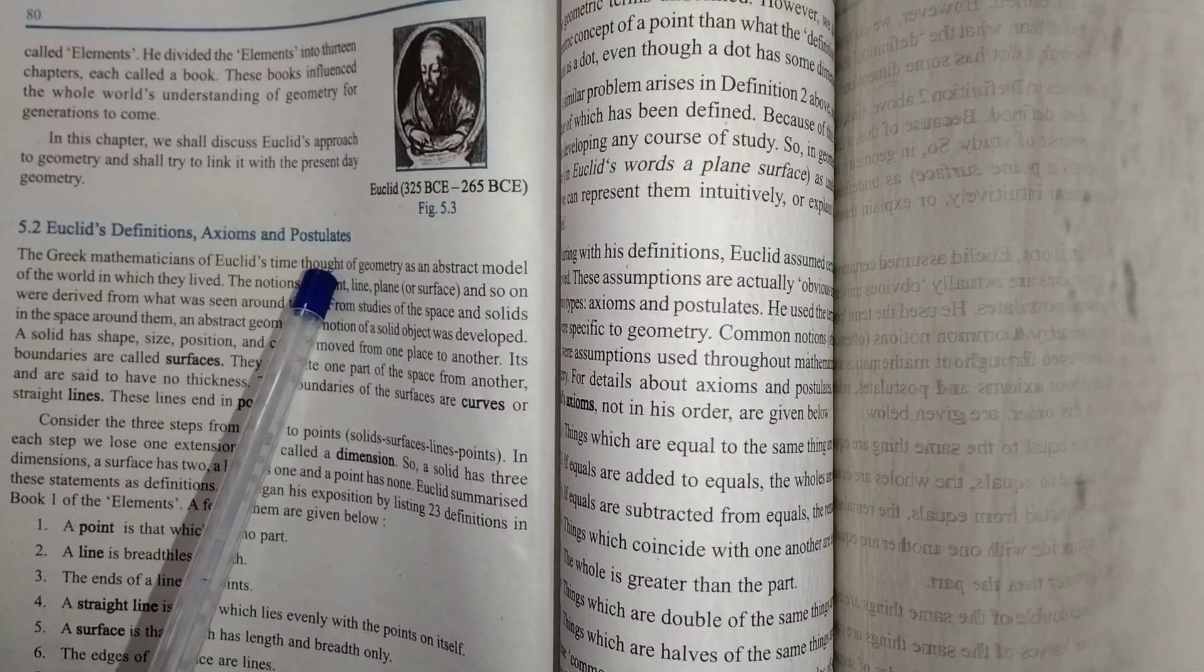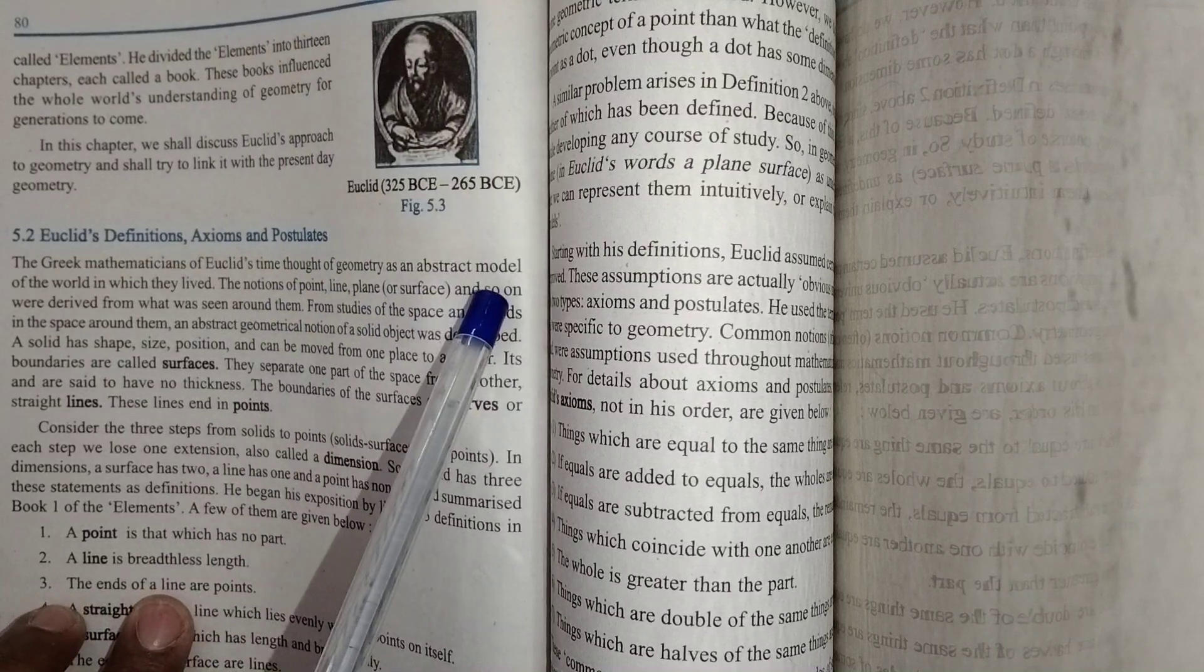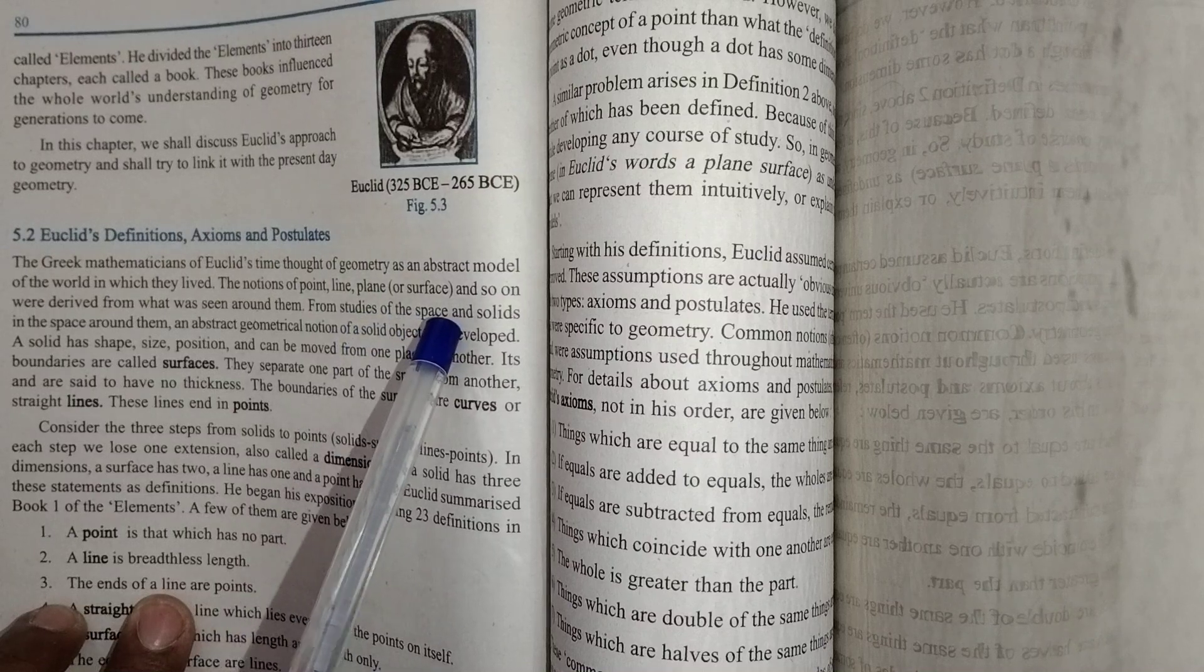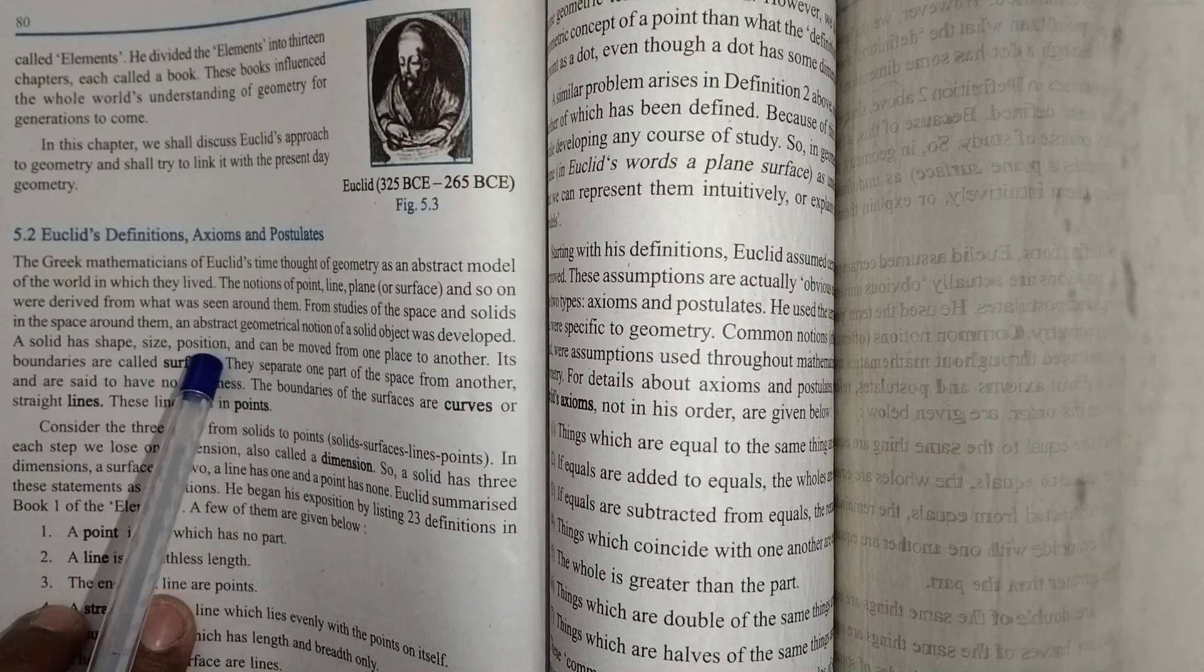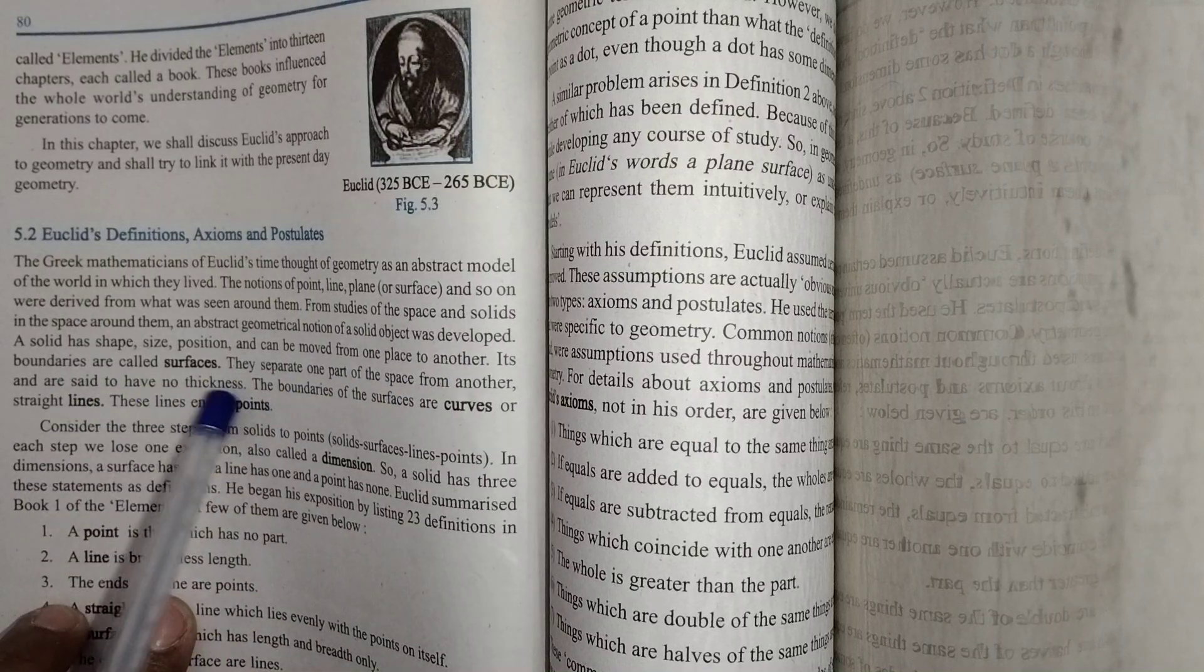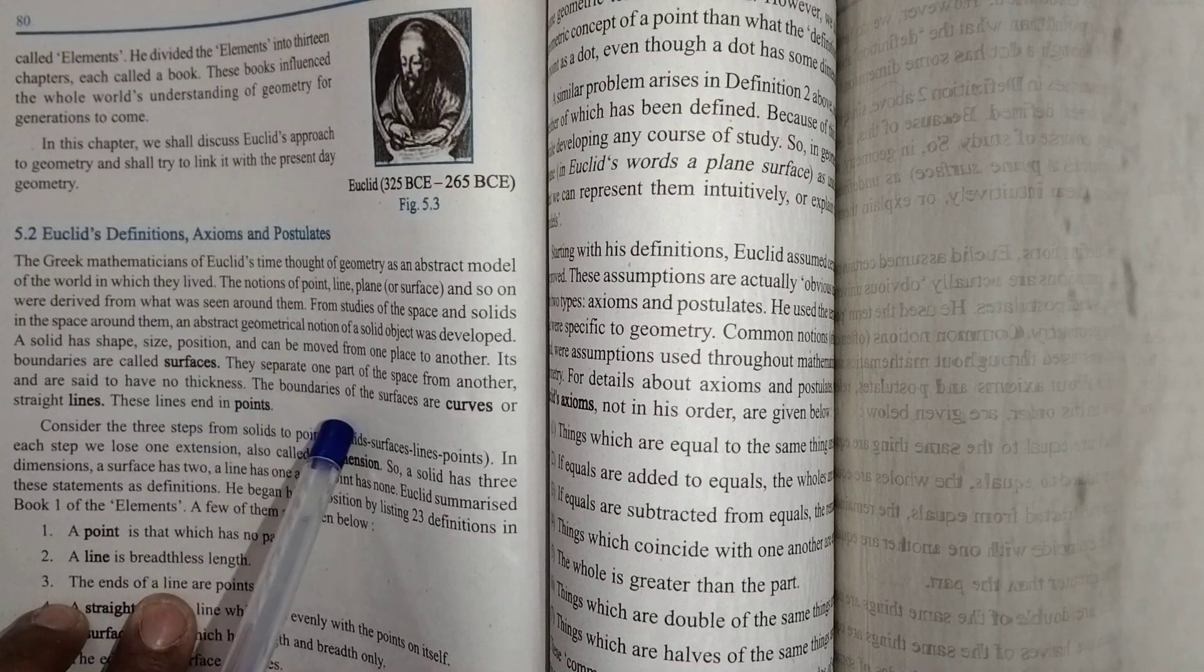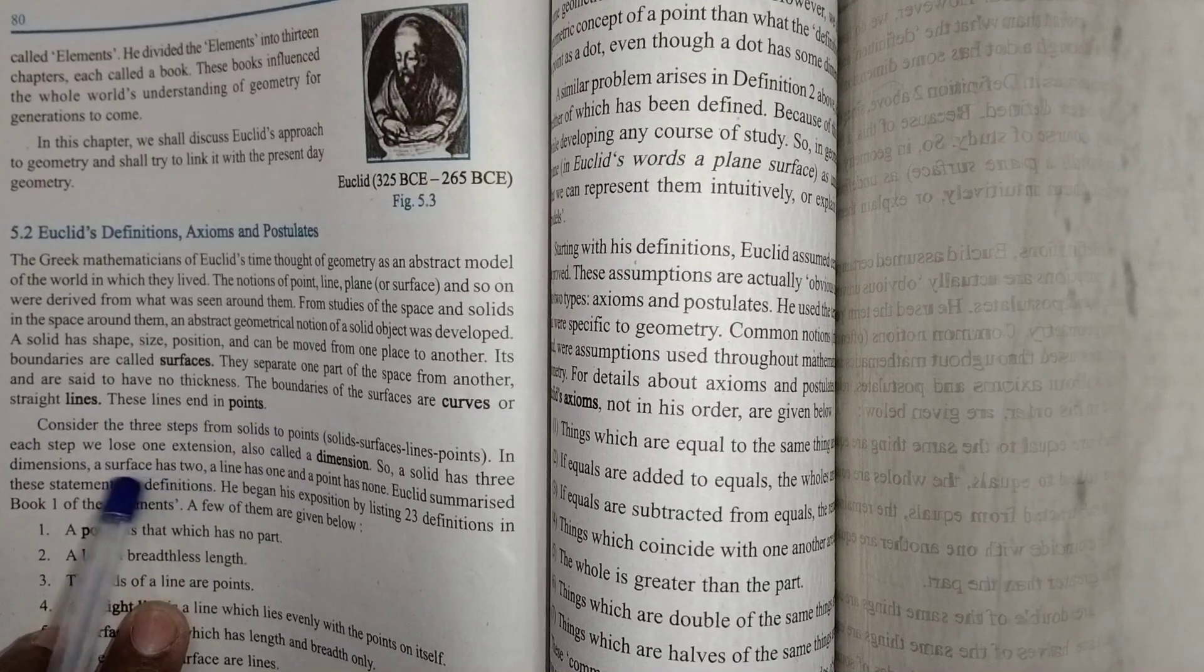The Greek mathematicians of Euclid's time thought of geometry as an abstract model of the world in which they lived. The notions of point, line, plane, and so on were derived from what was seen around them. From studies of space and solids, abstract geometrical notions were developed.